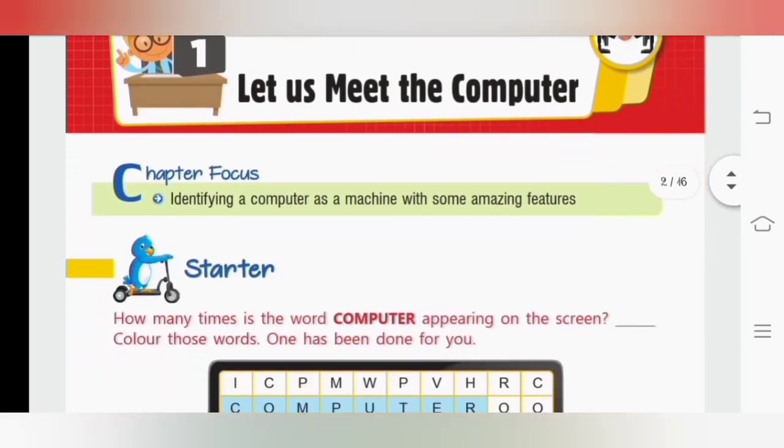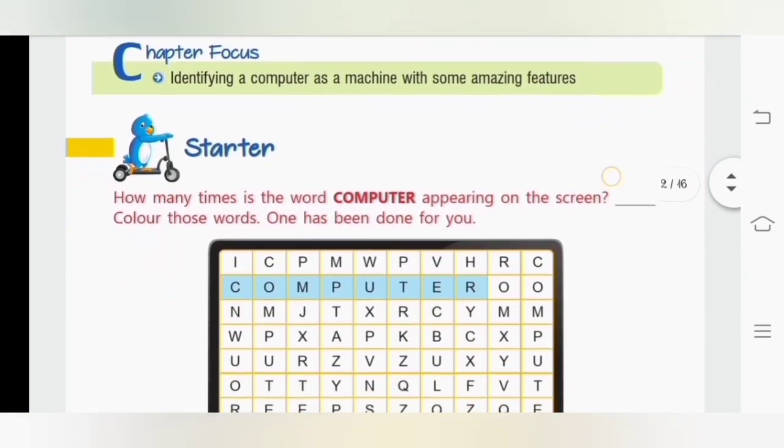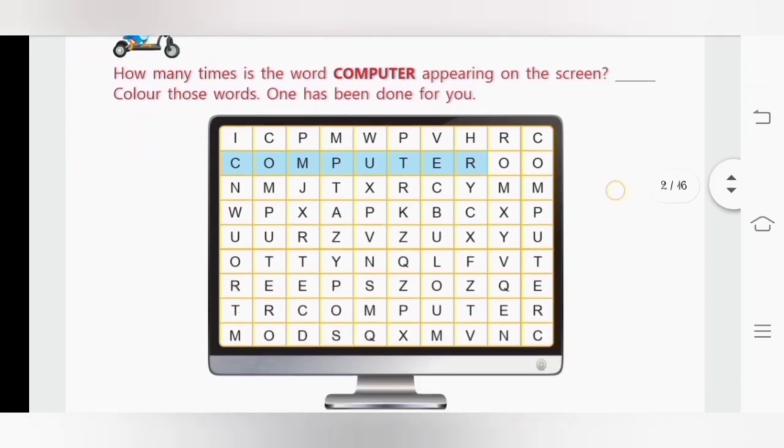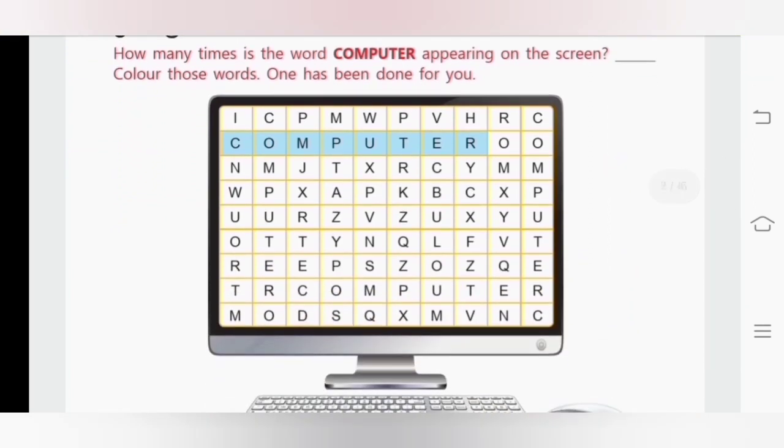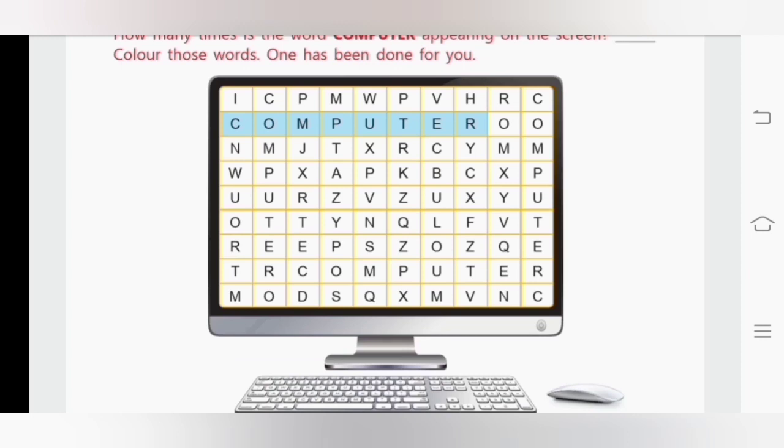In the beginning of the chapter there is an exercise for you. Let us solve it first. The question is how many times is the word computer appearing on the screen? Color those words one has been done for you. As you can see the word computer is colored with the blue color. You also have to find the word computer and you can color it with any color you like.